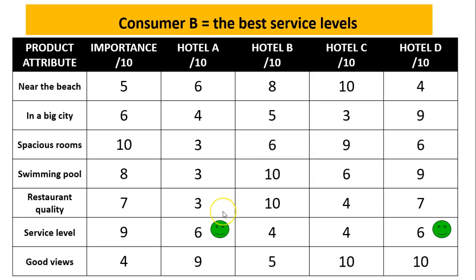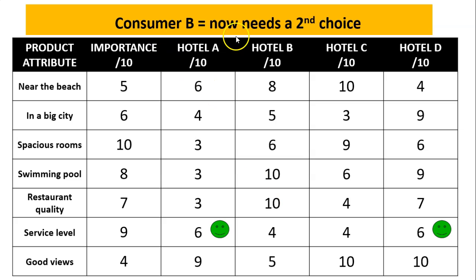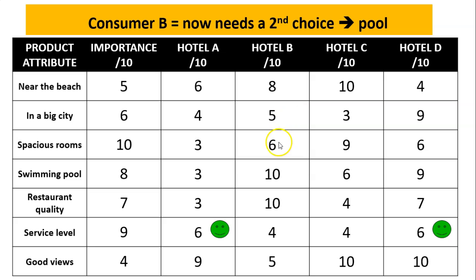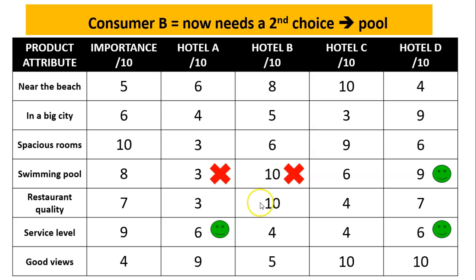For Consumer B, they want the best service levels. Unfortunately we've got a 6 out of 10 and a 6 out of 10 — they're the best but they're equal. So in the case of the lexicographic rule, whenever there's a tie we go to the second most important attribute. Consumer B now needs a second tiebreaker — let's say it's a great swimming pool. I've ruled out one hotel even though it scores 10 out of 10 for swimming pool, because only Hotels A and D tied on service — they're the only two remaining. Hotel A is ruled out because it has a poor swimming pool score, and Hotel B is not considered because its service level was too low and was ruled out at the first step. That means Hotel D is our choice.